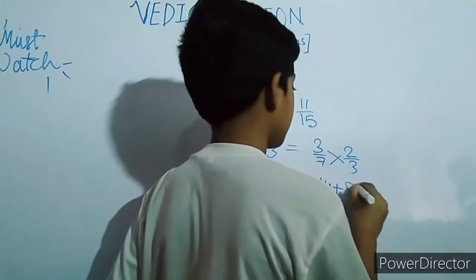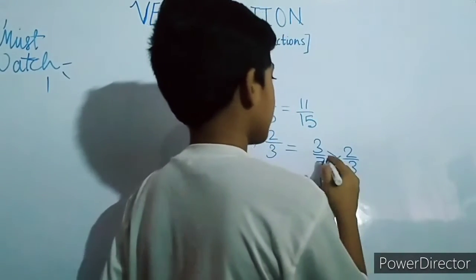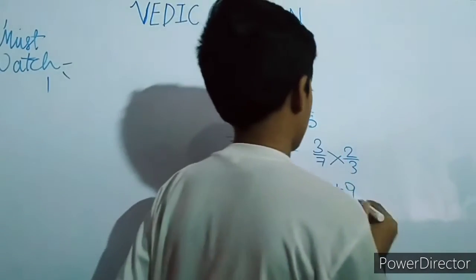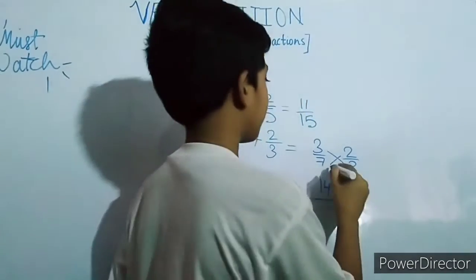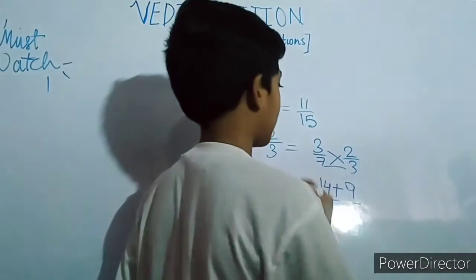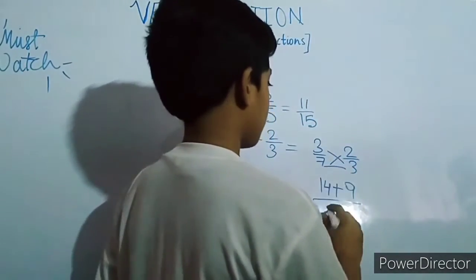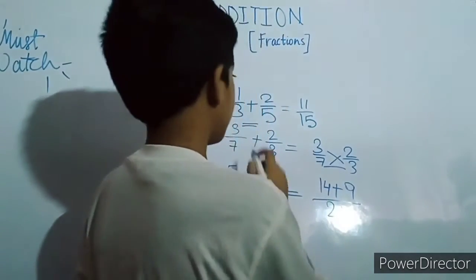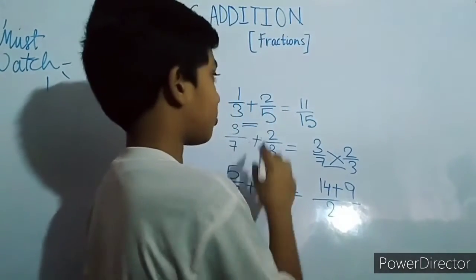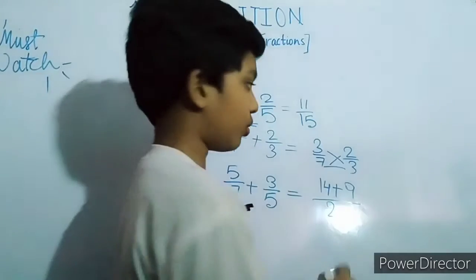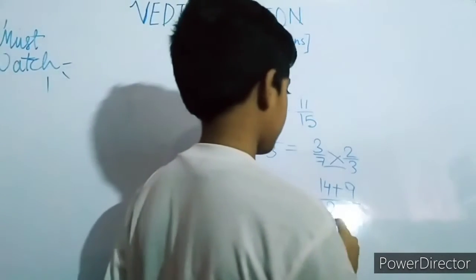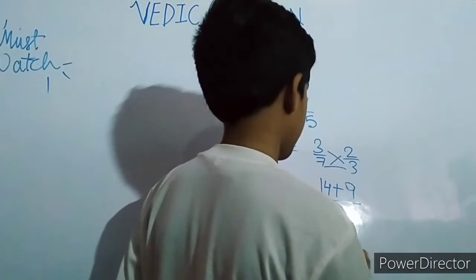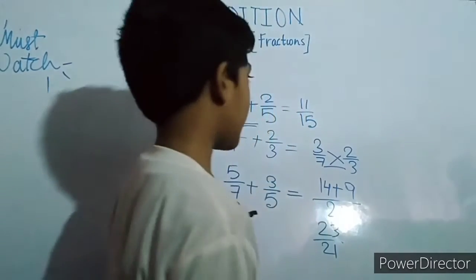Seven into two is fourteen, and three into three is nine. For the denominator, again multiply both numbers — twenty one. So three by seven plus two by three is equal to twenty three by twenty one.